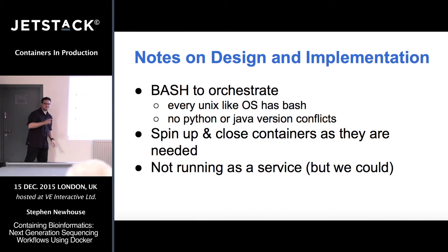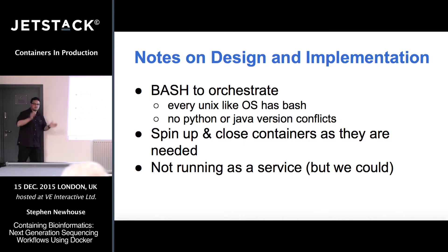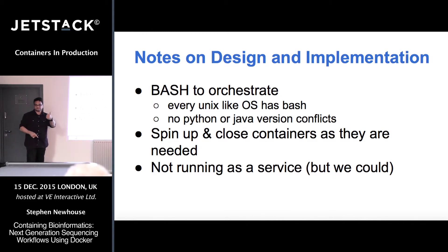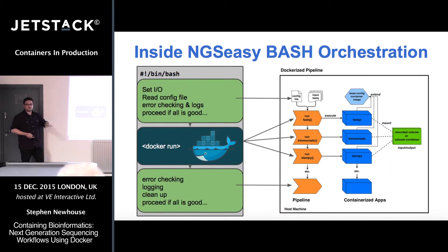For orchestration, I spin up an image, give it a name tied to the sample ID and the part of the pipeline running, so I can see what's going on, then it cleans up afterwards. That orchestration is baked into the bash: docker run, when it's finished, remove it by the tagged name. We're not doing swarm and Kubernetes yet, but that's something to look at when we get this into a real world NHS production environment where it's sitting around waiting for data to be thrown at it.